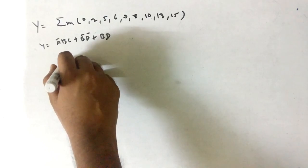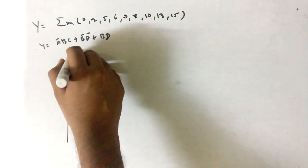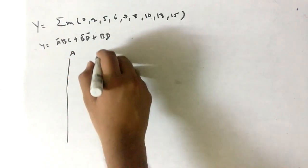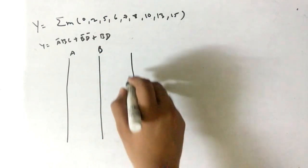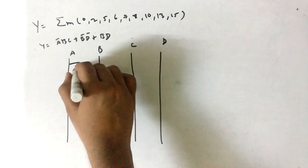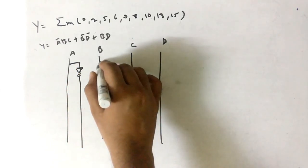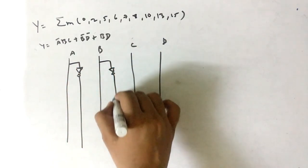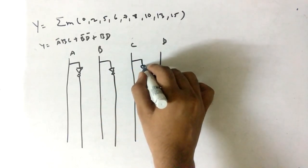The very first logic I would recommend you is first draw the a, b, c, and d lines, then the complement of that by using the NOT gates. So a complement, then we have b complement, then we have c complement, then we have d complement.